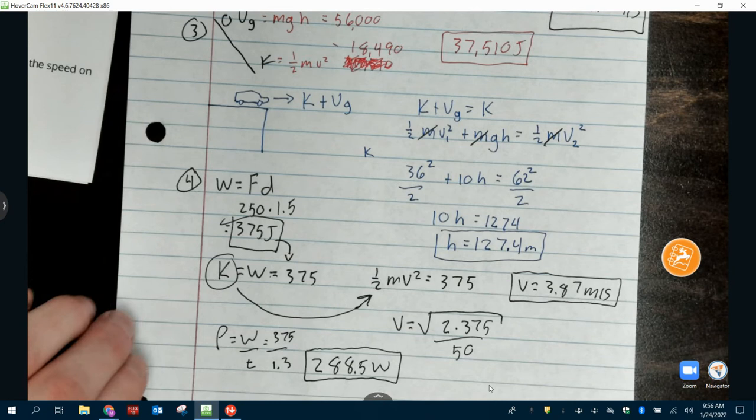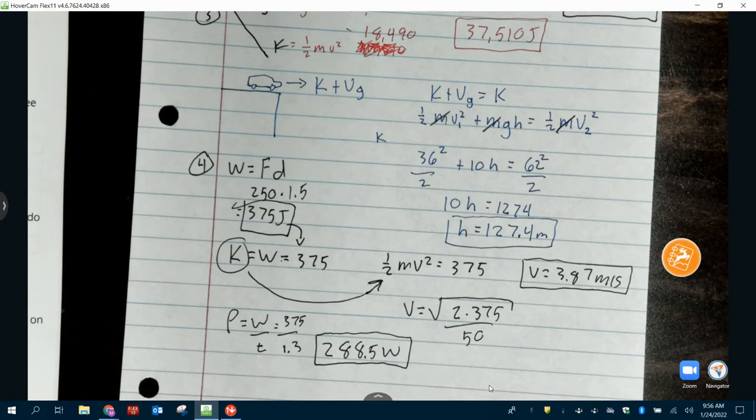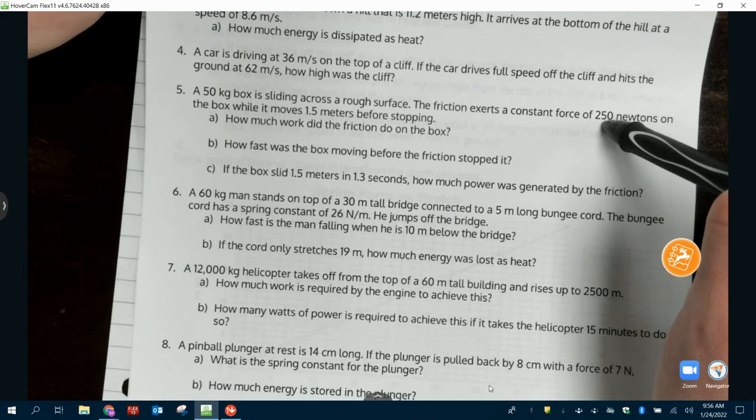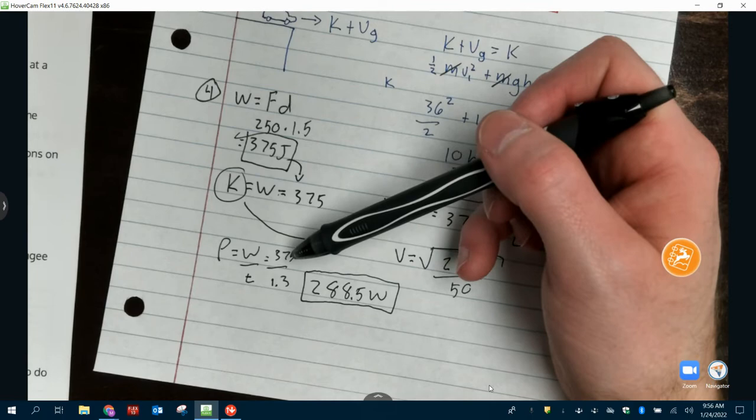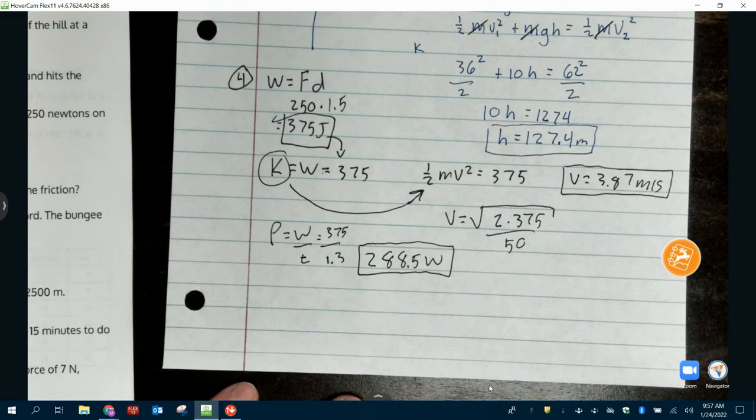We're taking our work over that 1.5, which is just 375. We already got that number. And then we divide it by the time, which was 1.3. So 375 over 1.3 should give us 288.5 watts. We know if the box slid 1.5 meters, that's what it already did. And it took that force to do it. You could do F times D. If I had asked part C without asking part A, you'd still have to do part A. We just had already done that.